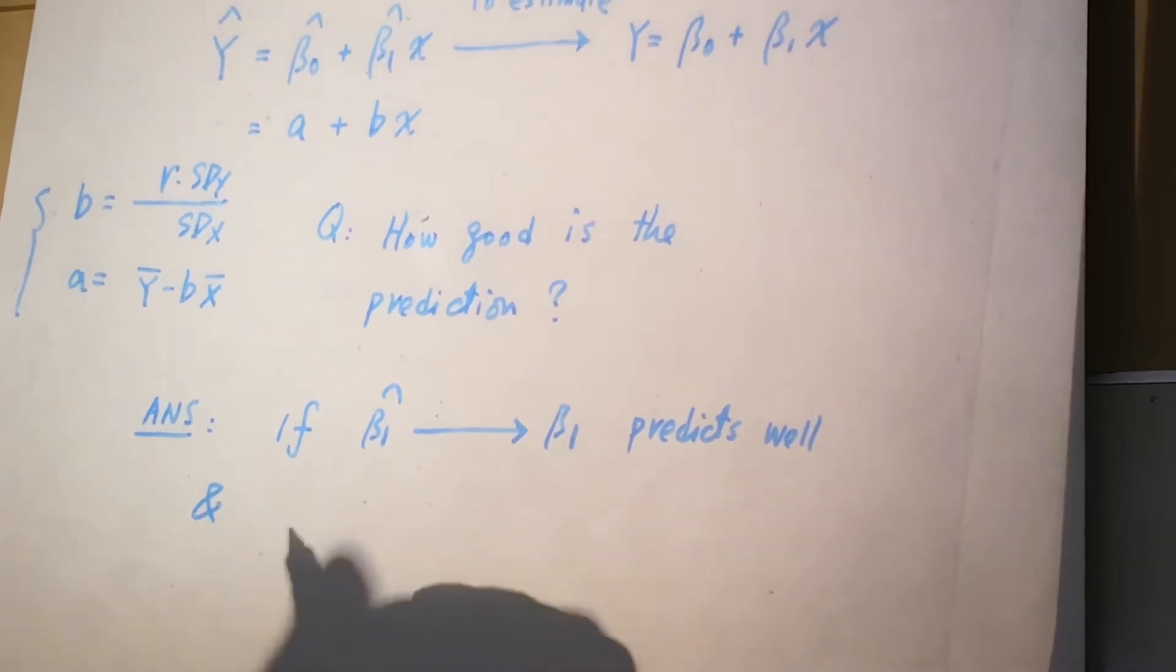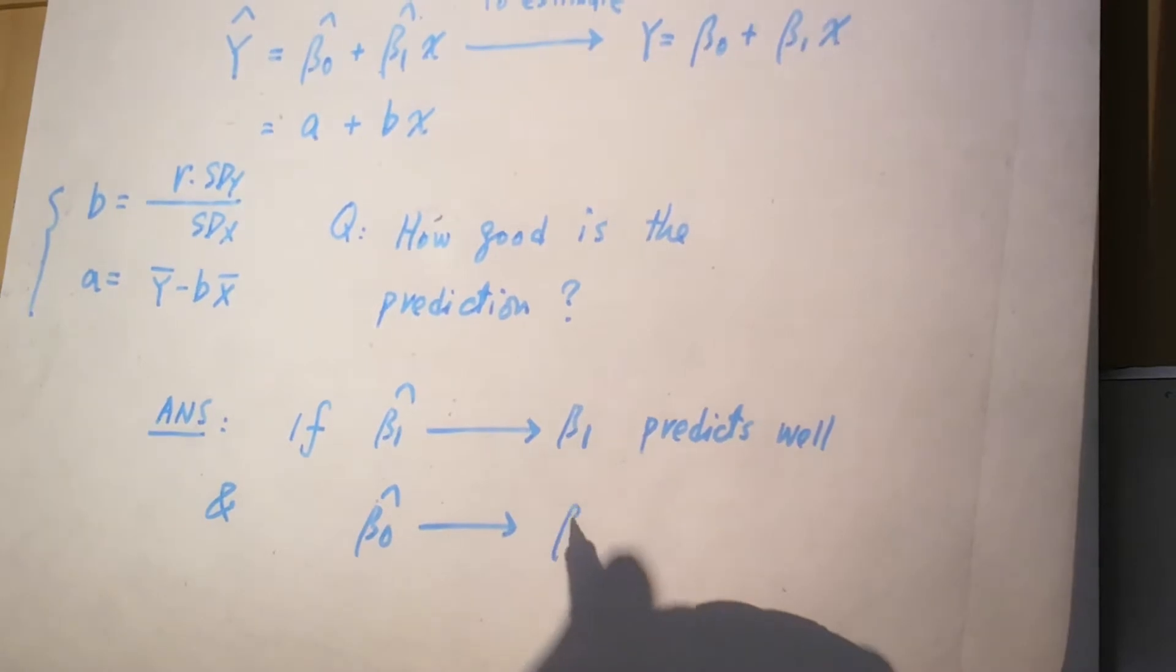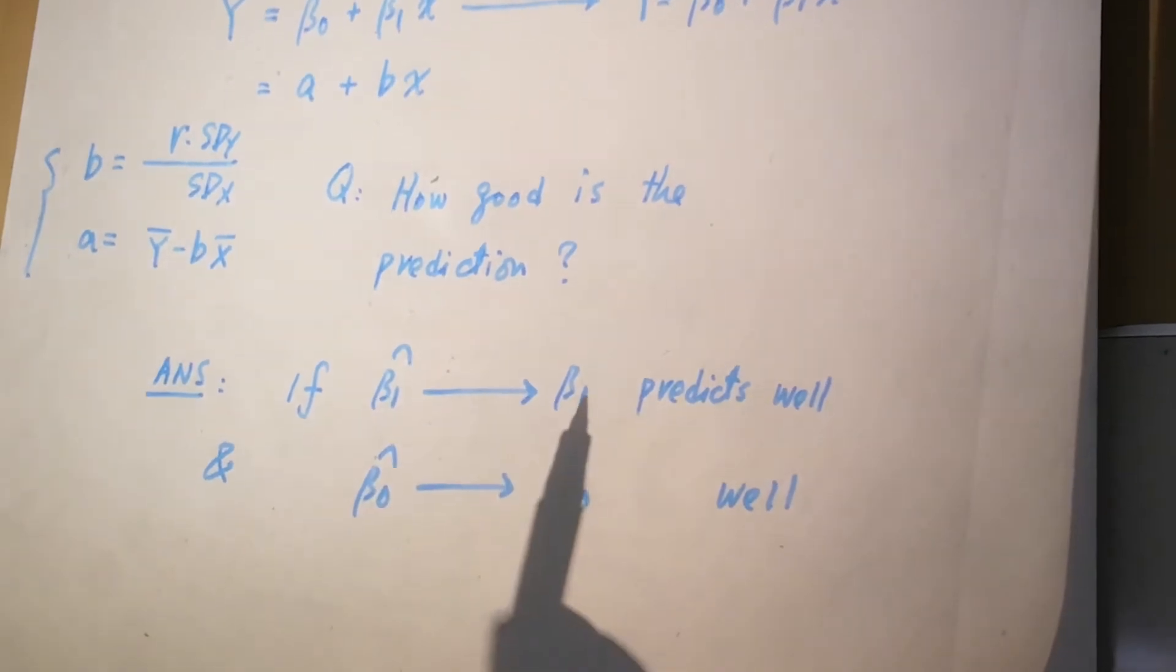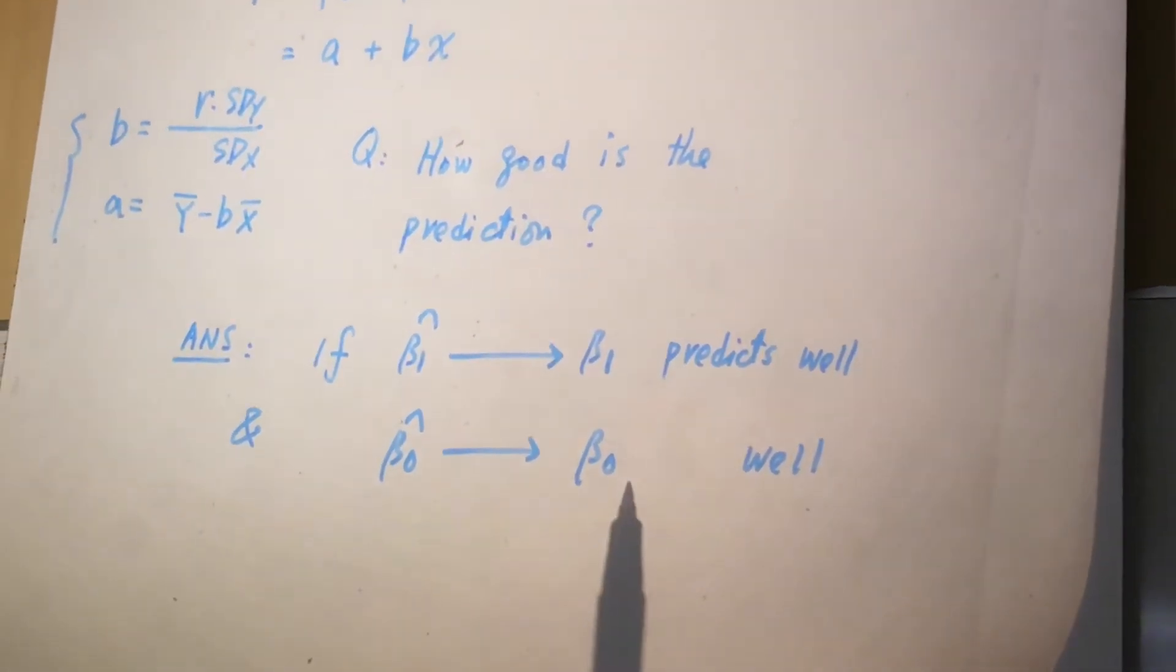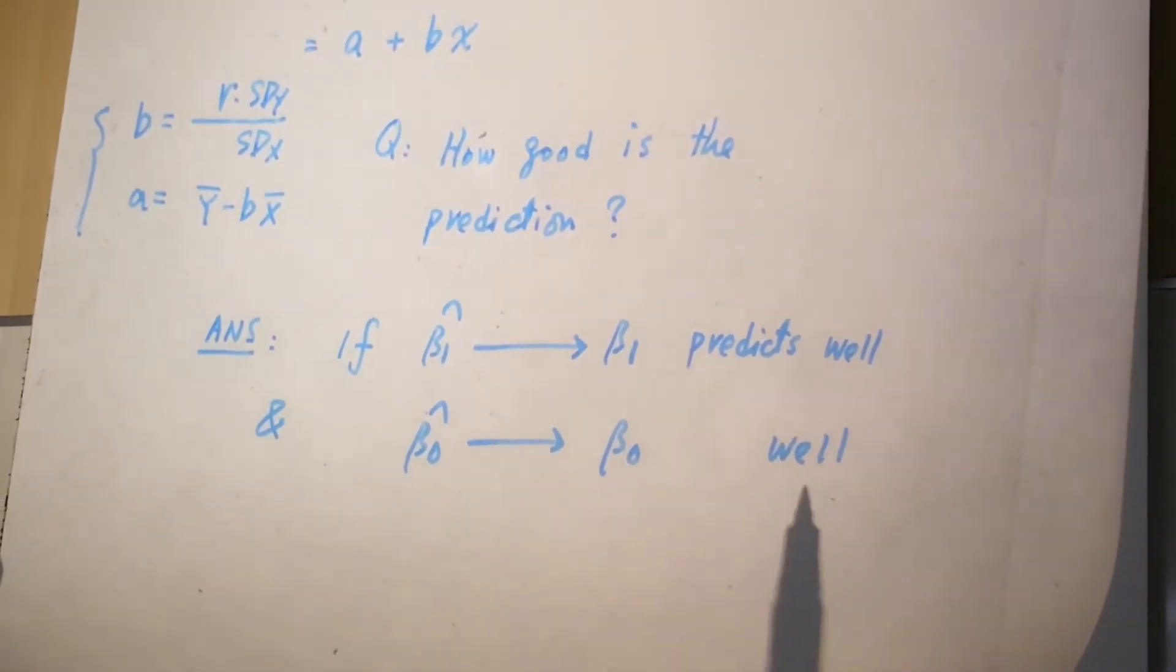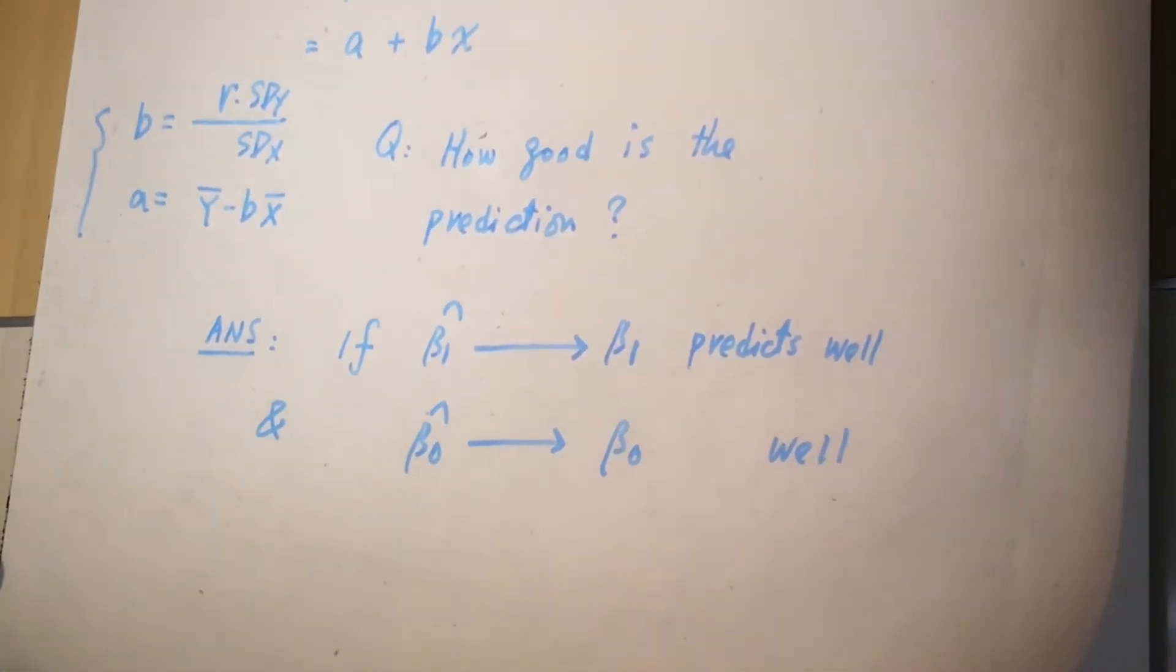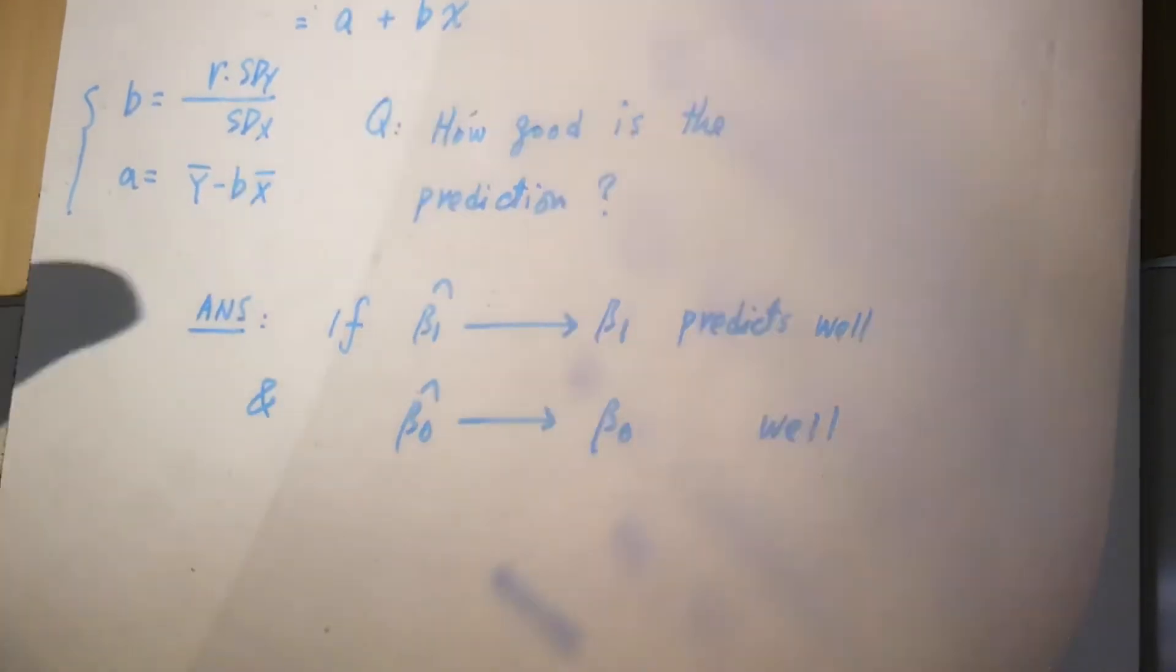And β̂₀ predicts β₀ well. Can we say it does a good prediction job? Almost yes, except there's one more thing we need to predict. Look at our earlier assumption.